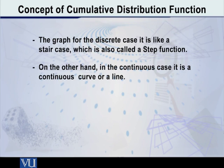Now, for the discrete case, it is like a staircase. It is not a continuous curve, but it is like a staircase, which is also called a step function. But on the other hand, in the continuous case, it is a continuous curve or line according to the situation.